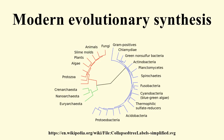The modern synthesis bridged the gap between the work of experimental geneticists and naturalists and paleontologists. It states that all evolutionary phenomena can be explained in a way consistent with known genetic mechanisms and the observational evidence of naturalists. Evolution is gradual: small genetic changes regulated by natural selection accumulate over long periods. Discontinuities amongst species are explained as originating gradually through geographical separation and extinction. This theory contrasts with the saltation theory of William Bateson. Natural selection is by far the main mechanism of change, and even slight advantages are important when continued.